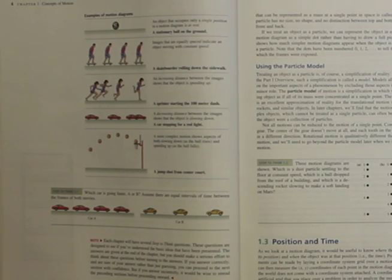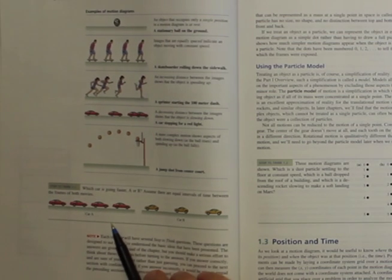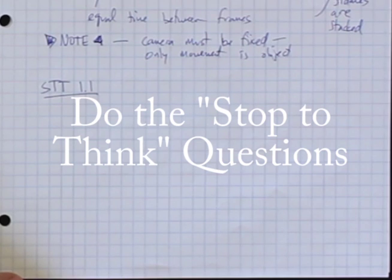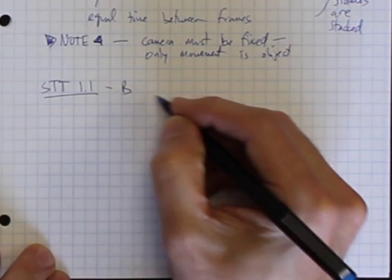All right, the next page. Now there's some examples of motion diagrams. Go through, read those, understand them. And then the stop to think. And I'll write down STT, stop to think 1.1. And so the question is which car is moving faster, A or B?